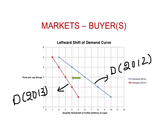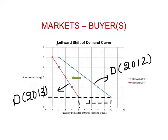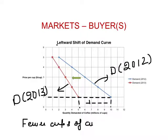What is happening is the following: at each given price, people now demand less coffee. In other words, the demand curve for coffee has shifted to the left. This phenomenon is called a leftward shift of the demand curve.